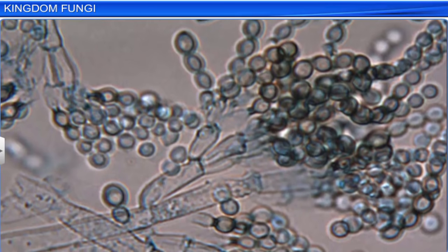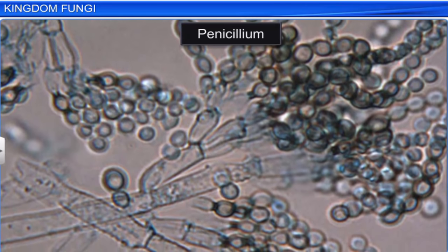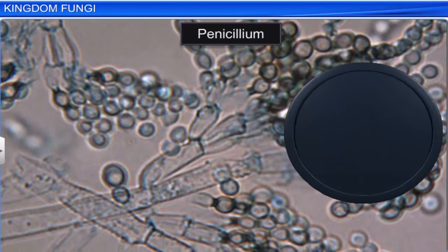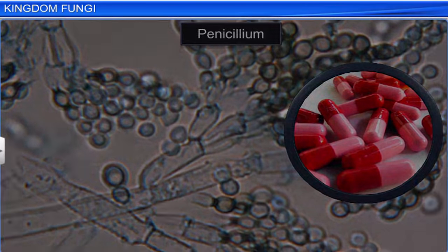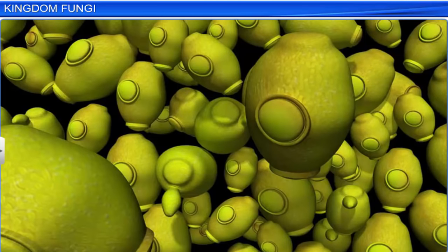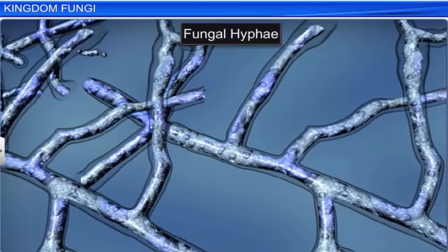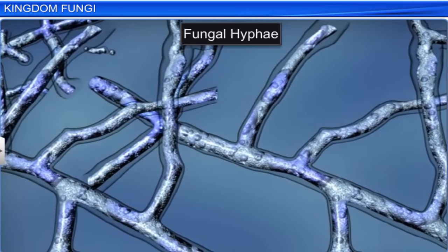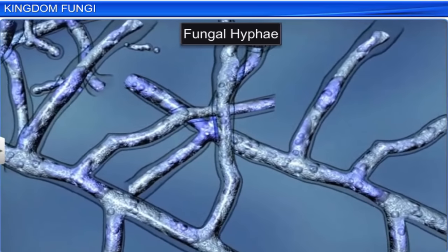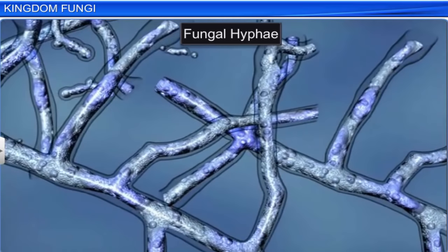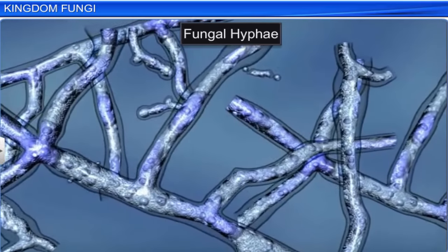There are also some like Penicillium that provide us with antibiotics. With the exception of yeasts, which are unicellular, fungi are usually filamentous. Fungi consist of long slender thread-like structures called hyphae. A network of hyphae forms the mycelium.